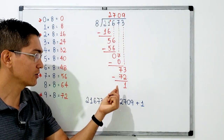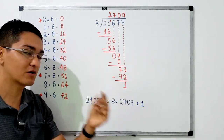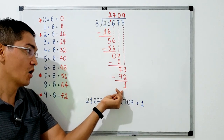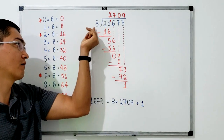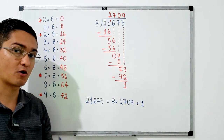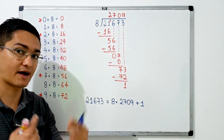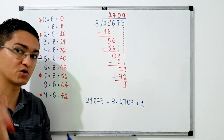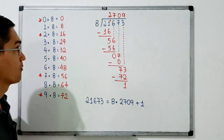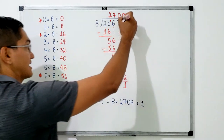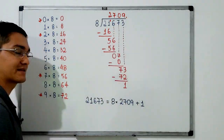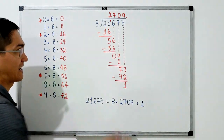For instance, if you want to divide 21,673 books equally among eight schools, each school will receive 2,709 books and there will be one book left over. You cannot divide one book equally among eight schools. But what if you want to continue the division? What should you do?